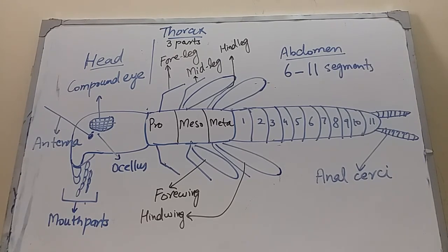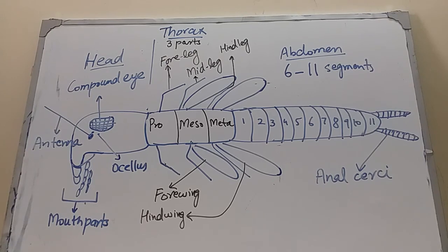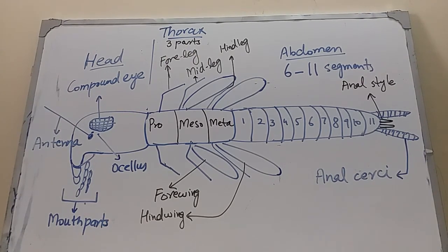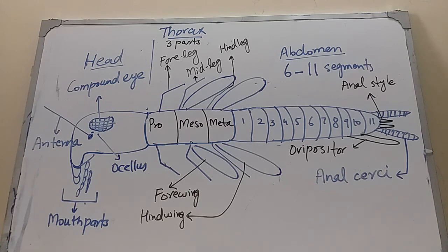The abdomen is the last part of the insect body, divided into 6 to 11 abdominal segments. Its appendages include one pair of segmented anal cerci present in both males and females, sensory in function. Some insects have one pair of unsegmented anal stile, a thread-like structure used for copulation. Some female insects have an ovipositor, an egg-laying organ arising from the abdomen.